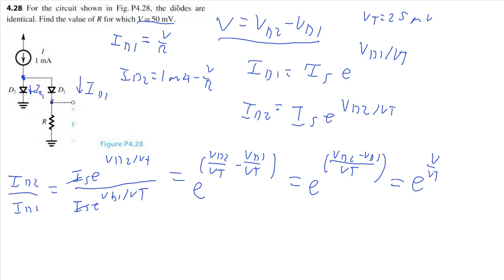Now, let V equal 50 millivolts. Therefore, ID2 over ID1 is equal to E to the power of 50 millivolts divided by 25 millivolts. That's just equal to E to the power of 2.